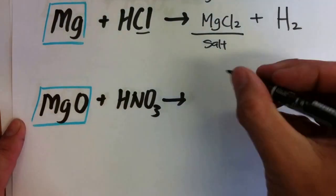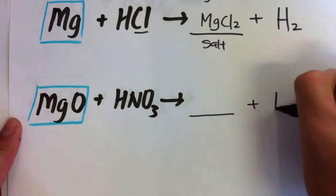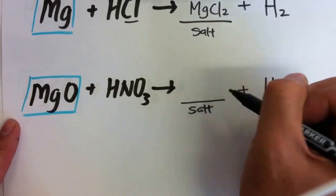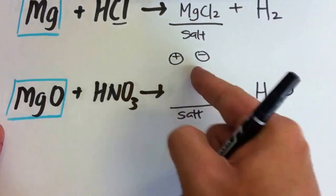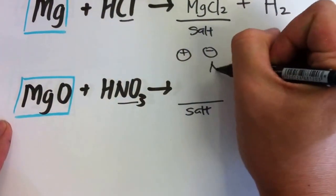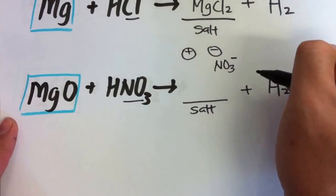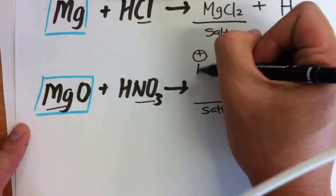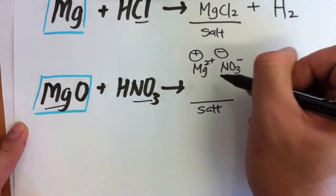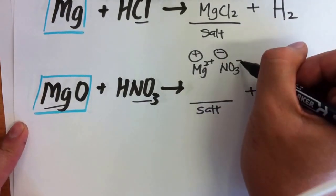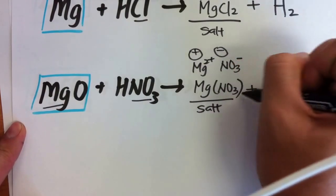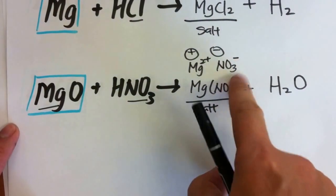Next: metal oxide plus acid gives you salt plus water. For HNO3, the negative comes from the nitrate. The positive comes from the metal, which is 2 plus. So you need 2 sets of NO3 minus and 1 set of magnesium — represented as Mg(NO3)2 because we need 2 sets of nitrate.